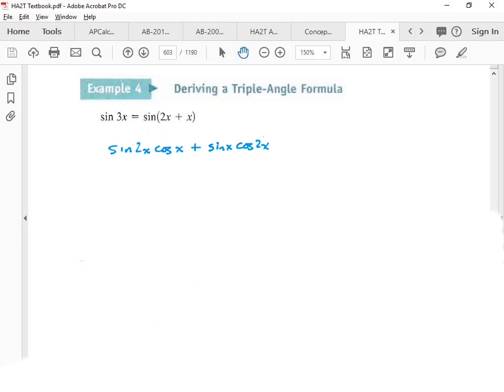So do you guys know of another formula that I can sub this out for so that I don't have a double angle right there? I think it's, isn't it cosine squared x minus sine squared x? No, that's not it. It's two sine x cosine x, right? And then we have to multiply this by cosine x.